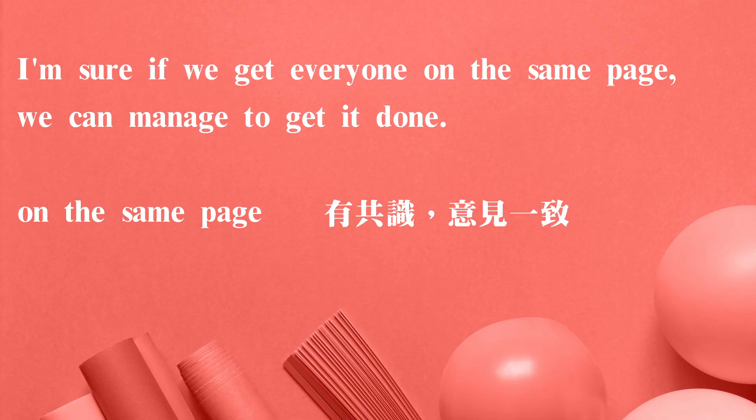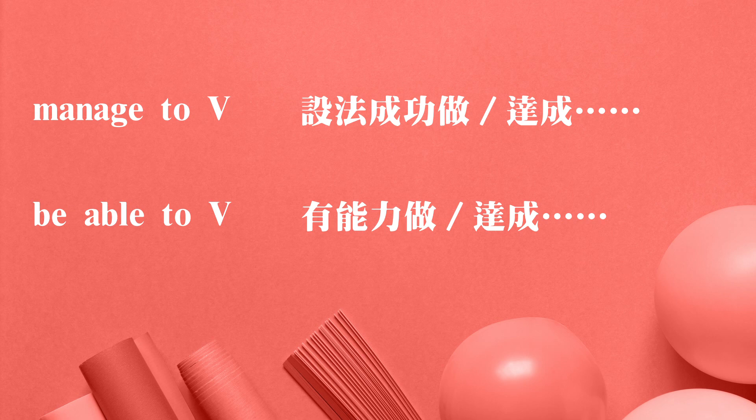Jennifer says, "I'm sure if we get everyone on the same page, we can manage to get it done." 那么Jennifer接着说呢,我非常确定,如果呢,我们让每一个人,这边的get是实义动词,如果可以让每一个人都在同一个页面上,这是什么意思呢?就是大家都达到了共识了,这个在business里面很常用到的一个片语。那么我们就可以manage to — 表示你很努力地设法要去达到一件什么事情 — get it done,就是把这件事情扳到成功了。So get something done is to finish something. Manage to do something就是be able to do something,你也可以这样讲。